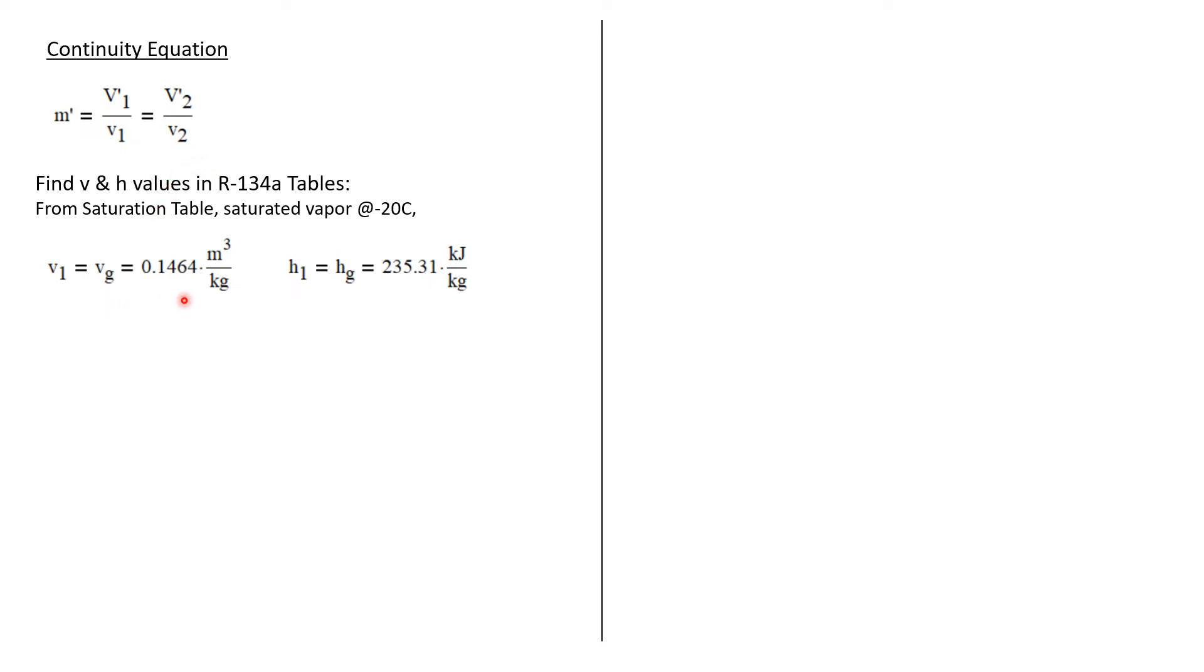So we can find some necessary values for this problem in the R134A tables. We'll begin in the saturation table as a saturated vapor at minus 20 degrees C. And we know the specific volume at state one is just going to be V sub G, which is the specific volume of a saturated vapor. And we can pull that value out of the table. And we know the enthalpy at state one is just H sub G. It's the enthalpy of a saturated vapor. And we have that value in the table.